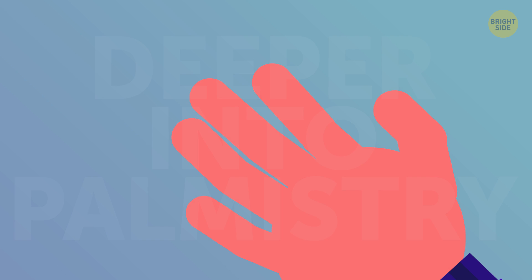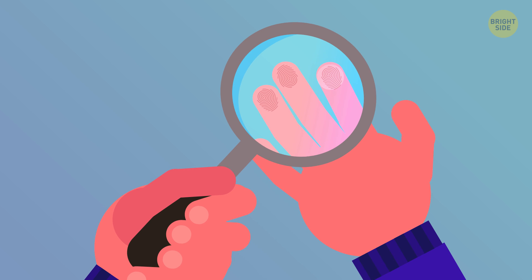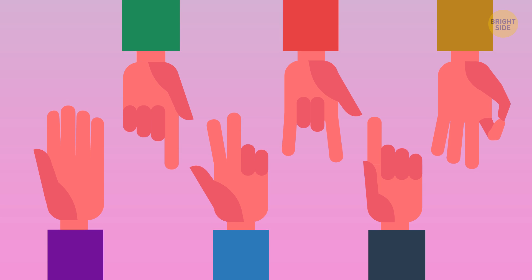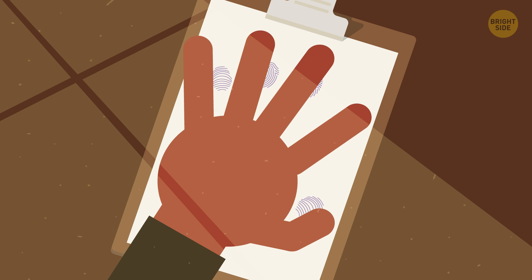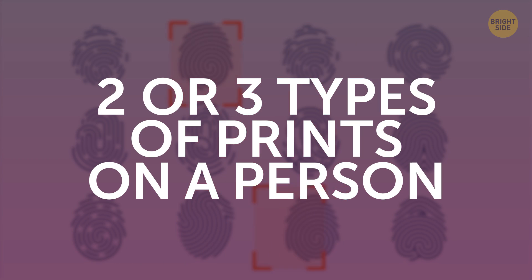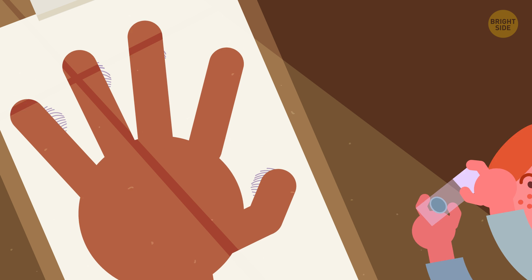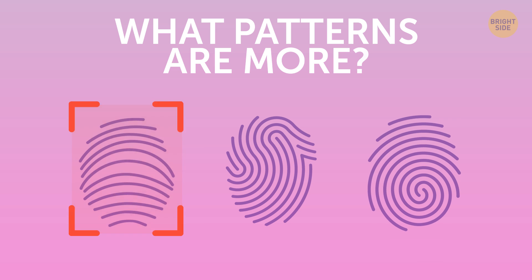But let's go a little deeper into palmistry and try to determine the character of a person using the patterns on their fingers. Each fingerprint is unique, but nevertheless, there are only three main types of patterns for them: an arch, loops, and a whorl. You can leave fingerprints on a white sheet of paper or carefully examine each finger. Usually, there are two or three types of prints on a person. It's very rare for all fingers to have only one type. Count which patterns you have more of.